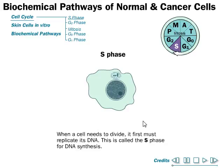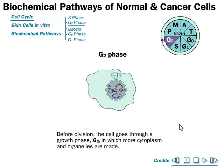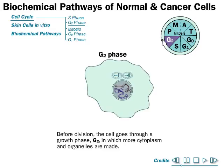Normally, when a cell needs to divide it must first replicate its DNA, which it does in the S phase, or synthesis phase, where the DNA is duplicated. Before division, the cell goes through a growth phase called G2, in which more cytoplasm and organelles are made, as they need to be shared with the next offspring.